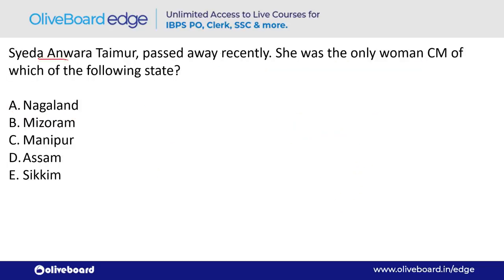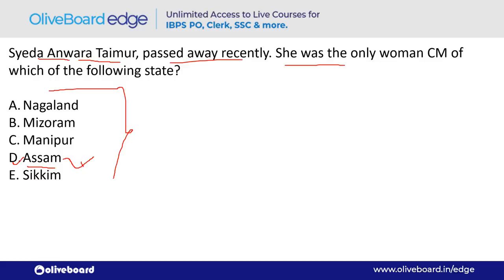Syeda Anwara Taimur passed away recently. She was the only woman Chief Minister of which state? The answer is Assam — option D. The capital of Assam is Dispur (D-I-S-P-U-R).